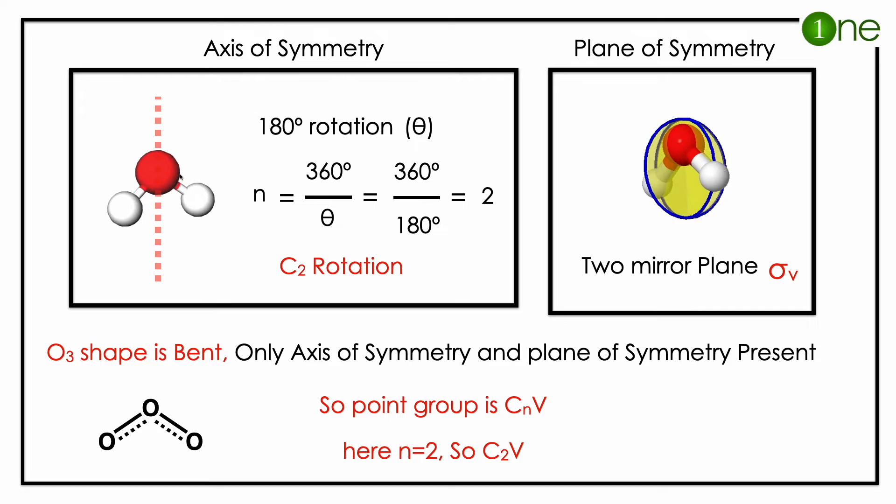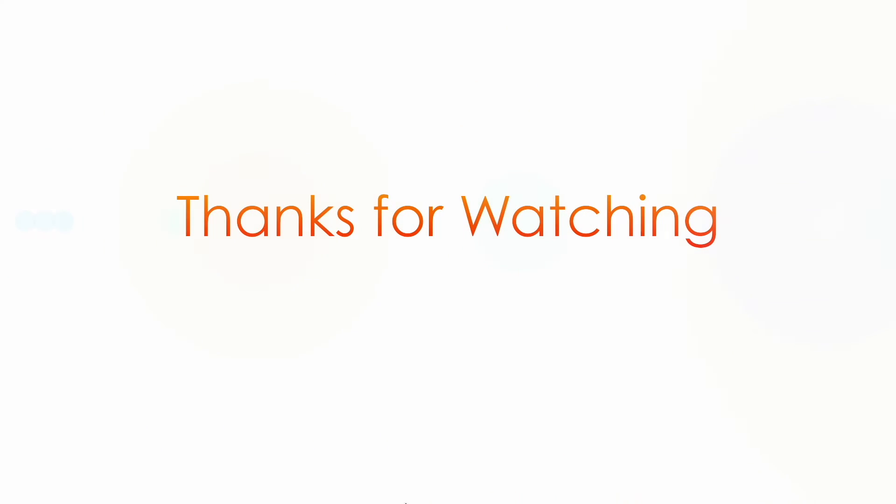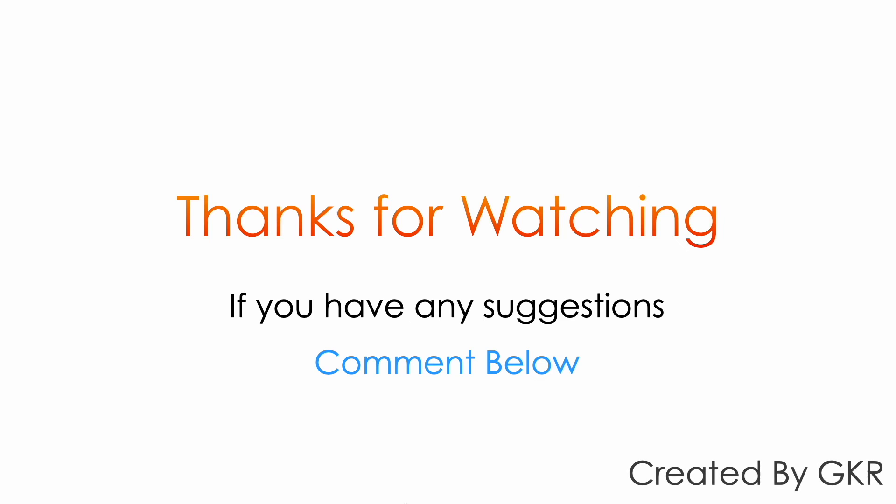The concept to outline here is that the ozone molecule is bent and the point group is C2v. That's all from this video. Thanks for watching. If you have any suggestions or feedback, comment below.